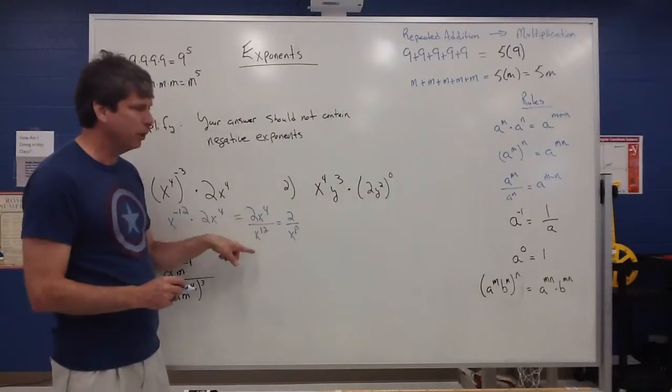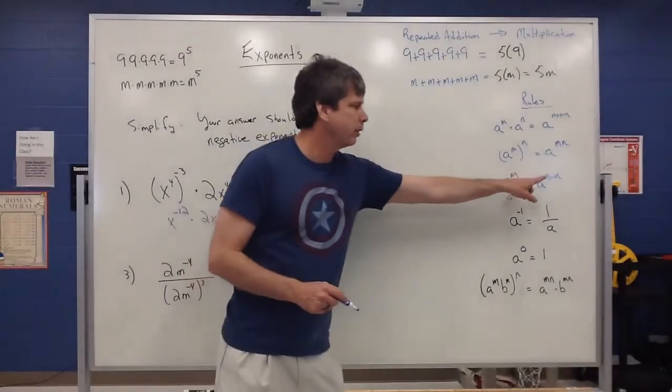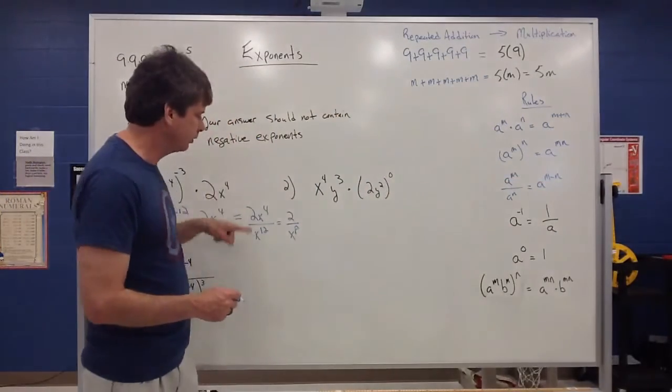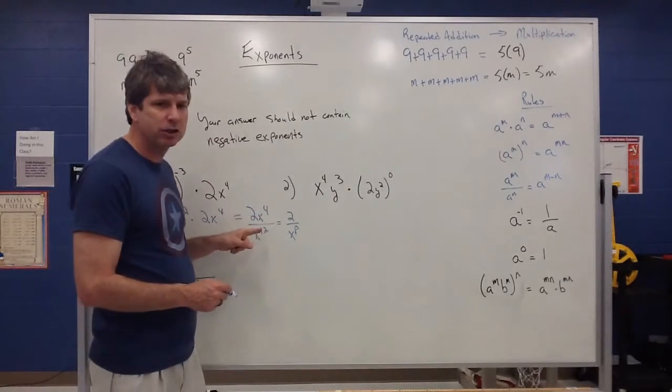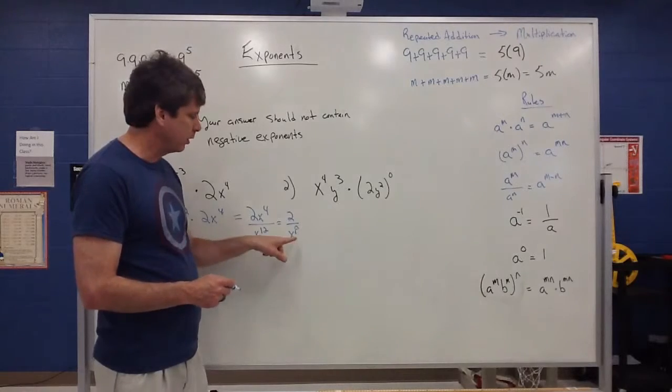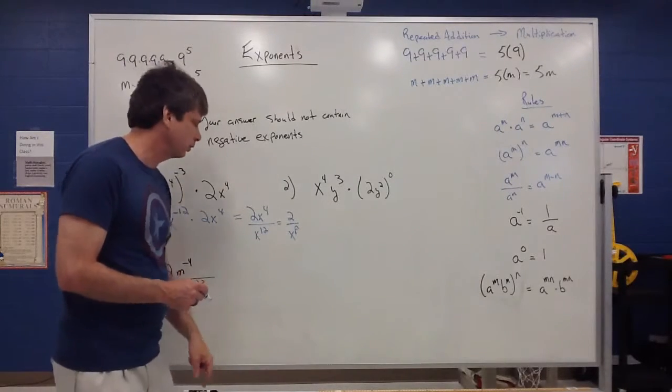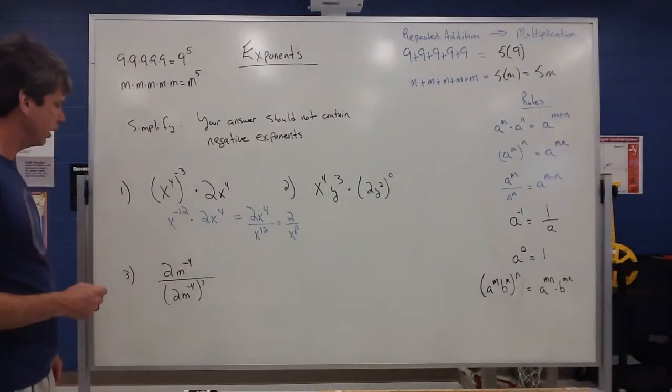Notice how again, I'm not really using this rule as much as I'm just kind of mentally just marking things out of my head. But you could say, well, 12 minus 4 is 8 but I've got to pay attention that there's more on the bottom therefore that x to the eighth is in the denominator. So 2 over x to the eighth would be your final answer on that one.